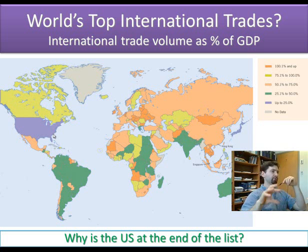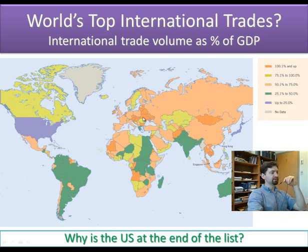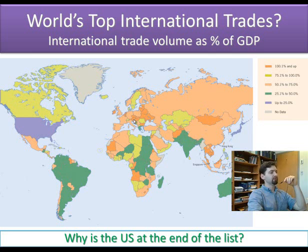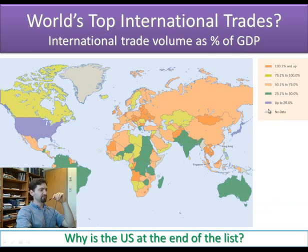A product going from New York to LA travels a greater distance than across much of Europe, but in the United States it is still considered domestic. In Europe, if you live in a small country like Belgium, the Netherlands, or Luxembourg, just a few miles from home is already international trade — that's already Germany or Luxembourg. So trade between New York state and California is still counted as domestic, which is why the United States ends up at the bottom of the list in terms of trade as a percentage of GDP.